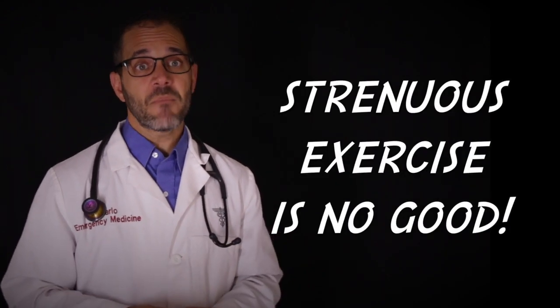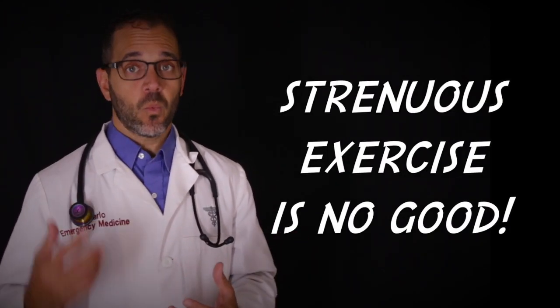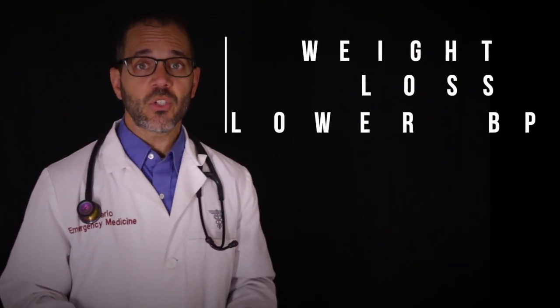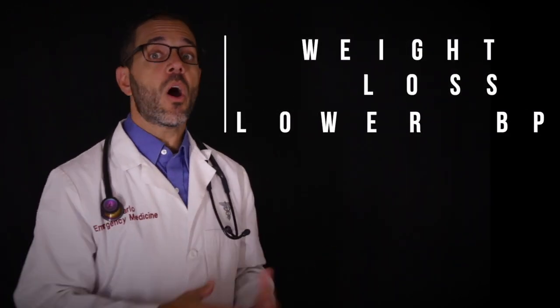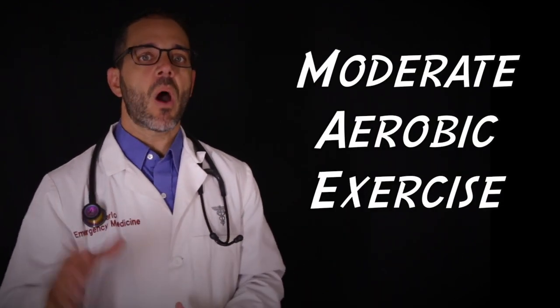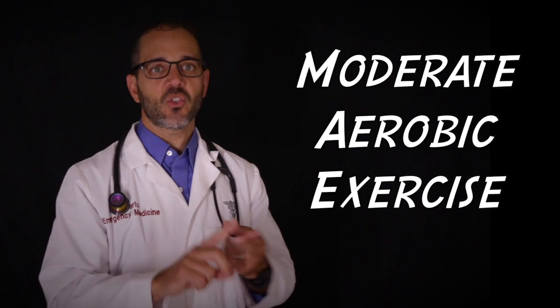Strenuous exercise can make an irregular heartbeat worse, but moderate exercise can bring long-term benefits like weight loss and lower blood pressure, and that can help you ward off heart failure, which is a major risk when you have atrial fibrillation. Consider a routine that balances regular moderate aerobic exercise with stretching and strengthening activities like yoga.